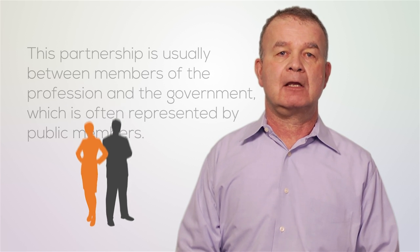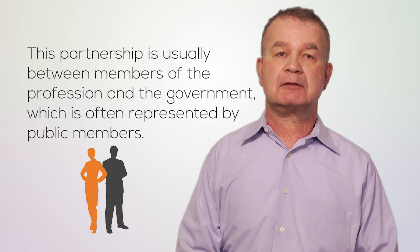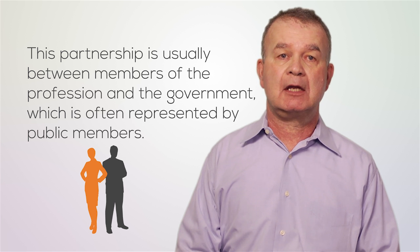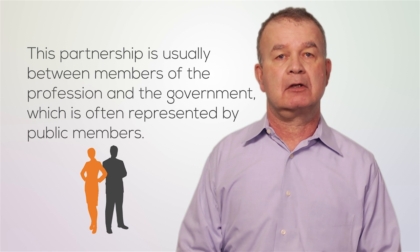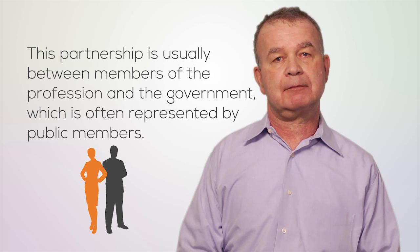There are at least two self-regulation subcategories. There's voluntary, where a profession decides to self-regulate its own activities on a voluntary basis. And there's statutory, where a profession carries out self-regulation on the basis of a government rule that establishes the regulatory process. Joint responsibility models of professional regulation imply a degree of partnership in the regulatory process, usually between members of the profession and the government, which is often represented by public members.